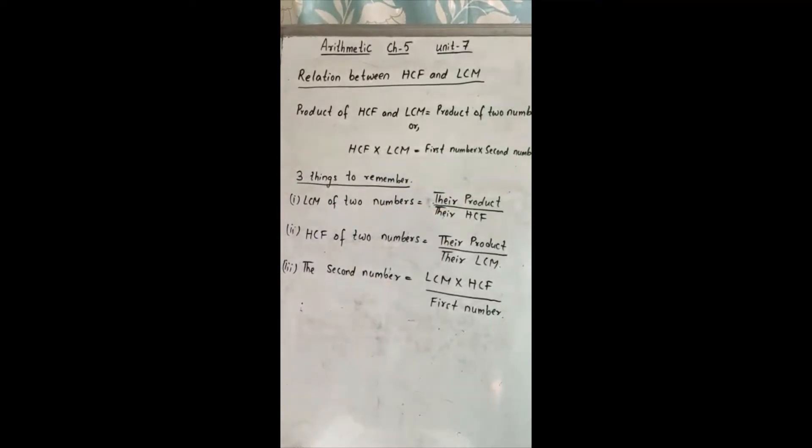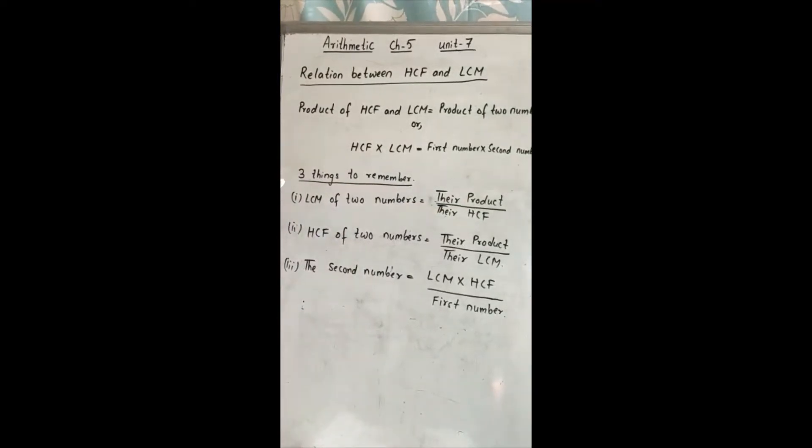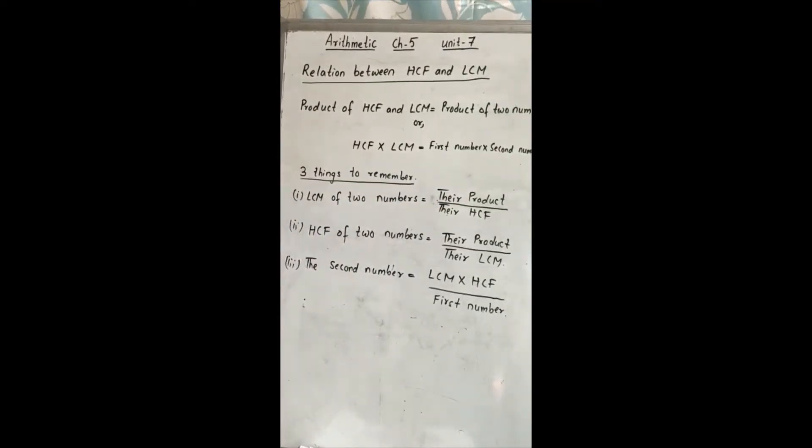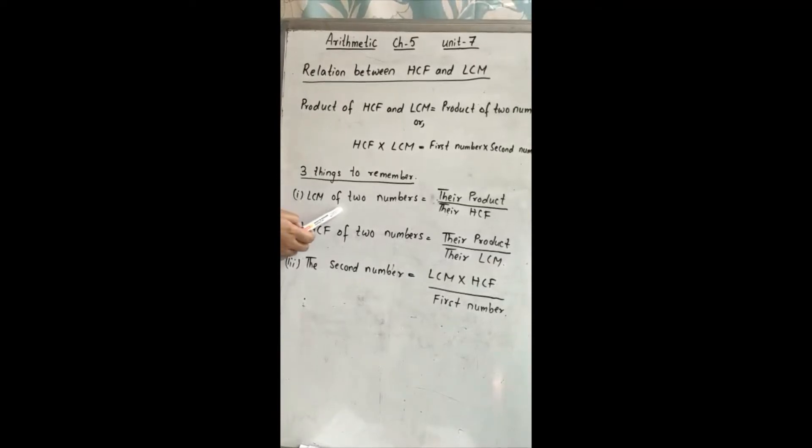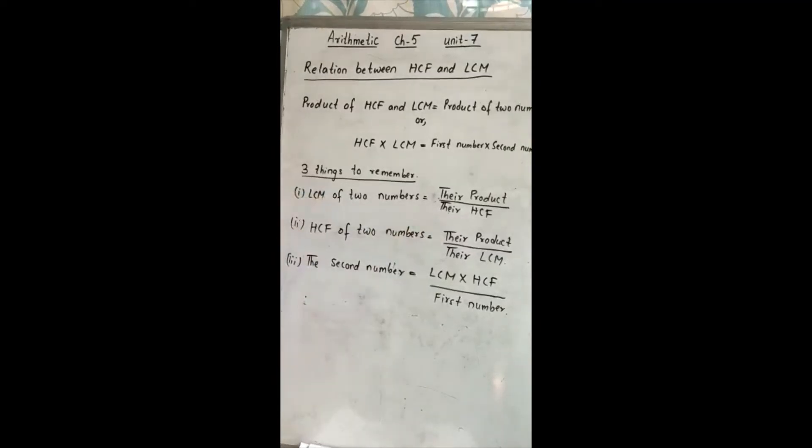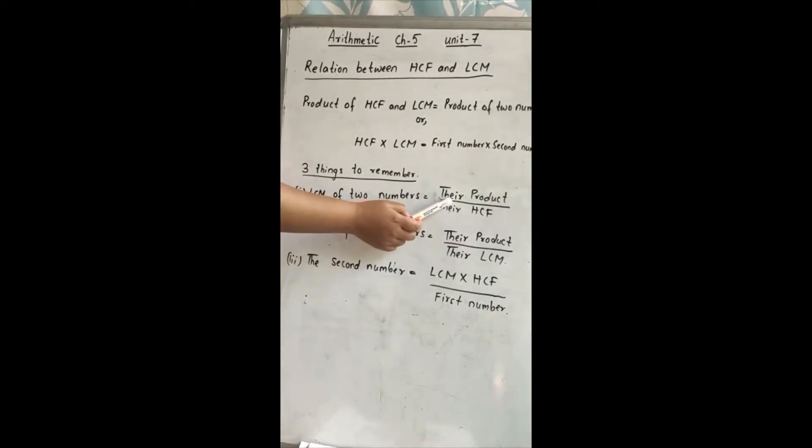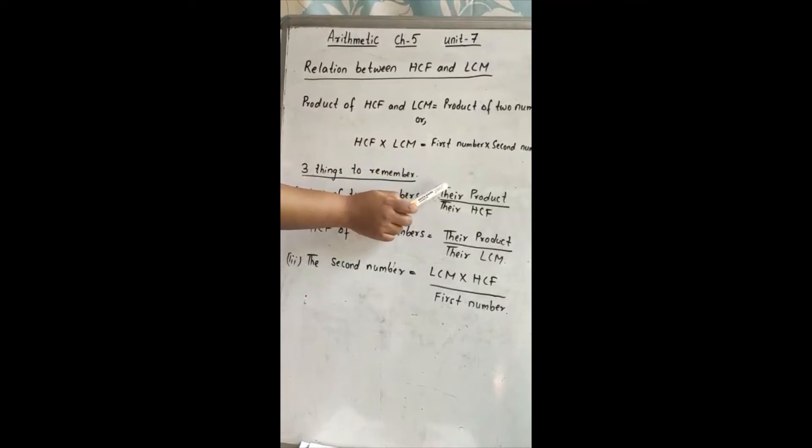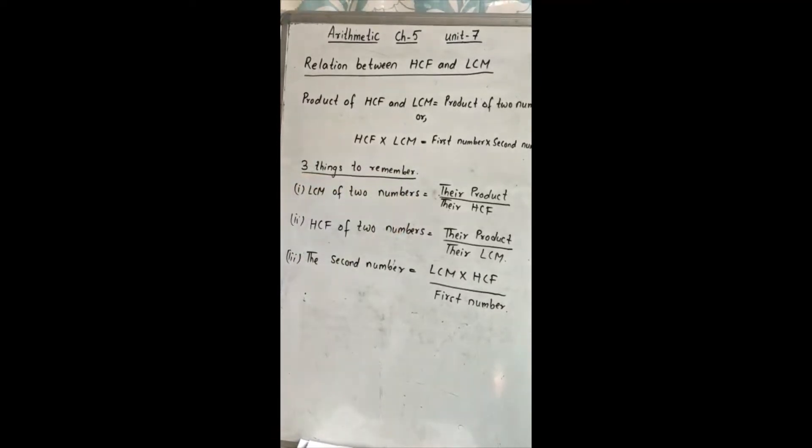Now you need to remember three things here. Please write down in your copy students. Number one is LCM of two numbers equal to their product divided by their HCF. When I say their, it refers to the first number and the second number.